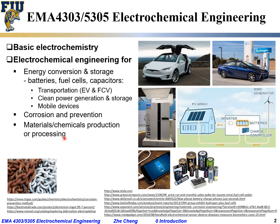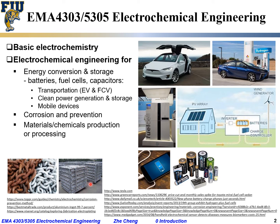Electrochemical engineering is also the base for many materials and chemical production or processing. Here is an image for aluminum produced by electrolytic production through a molten salt medium — that is the primary method to produce industrial aluminum. For material or electronic processing, people quite often use electroplating or electrodeposition, as shown in this photo.